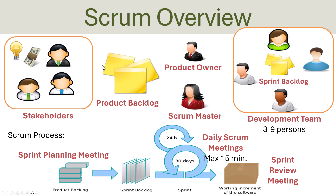Then we have the product backlog, which is basically a list of all the requirements that should be implemented in the software. When the project starts, the team begins working in so-called sprints. A sprint can last from one to four weeks. When a sprint starts, they have a sprint planning meeting where they select some items from the product backlog, put them in a task board, and work on those items until the sprint is finished. At the end of the sprint, they have a sprint review meeting where the team goes through all the work done in that sprint.